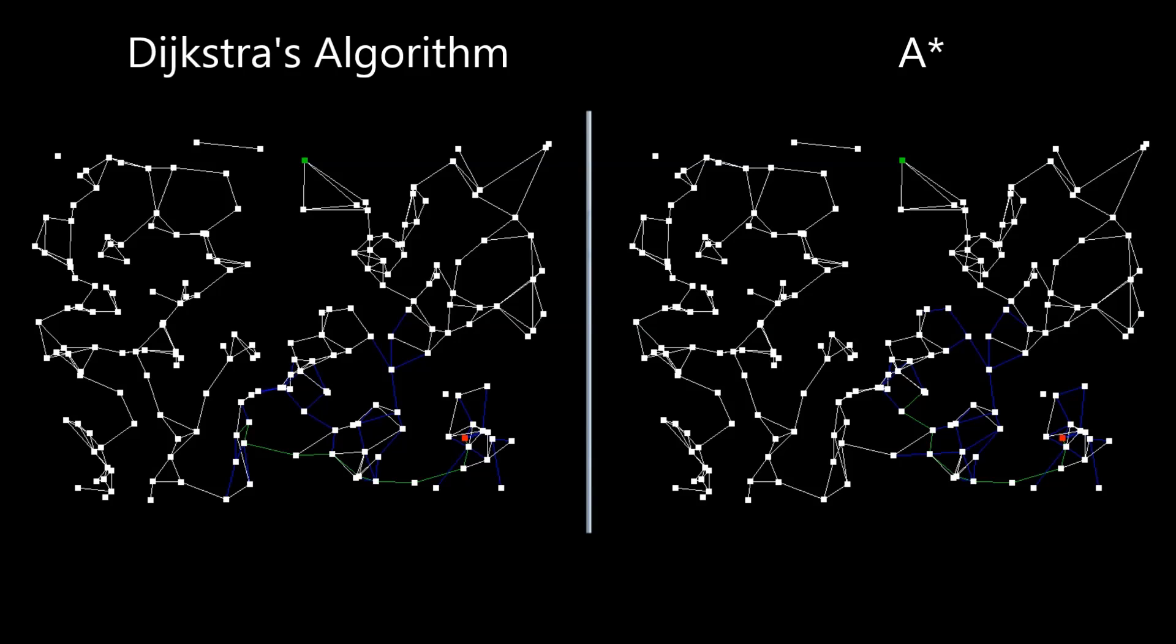On the left we have Dijkstra's Algorithm, and what it does is from the start it will look for every connected node. From each of those nodes it will traverse those connected nodes. Traversing of nodes can be seen as the blue lines. In green the current path is displayed.